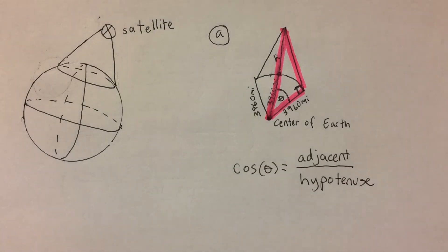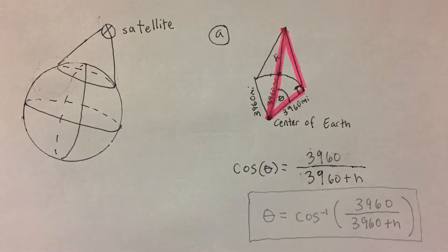The adjacent side is represented by the Earth's radius, 3,960 miles. The hypotenuse is represented by the Earth's radius plus the height of the satellite, 3,960 plus h. To solve for theta, we need to take the inverse cosine of both sides of the equation. Now we have theta written as a function of h.